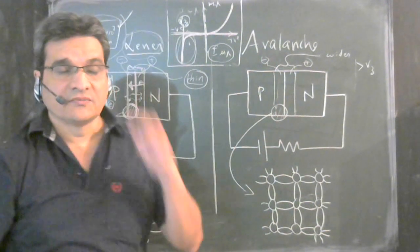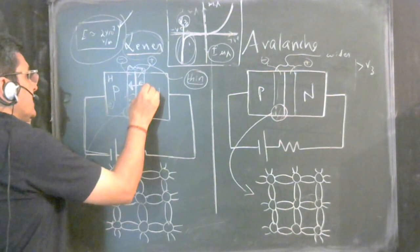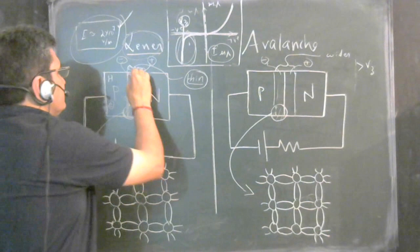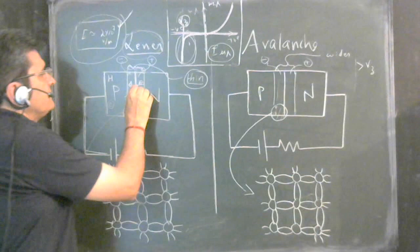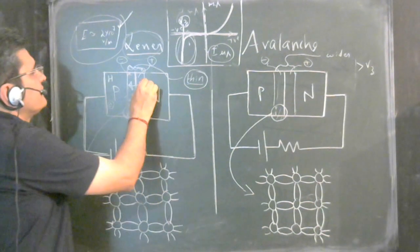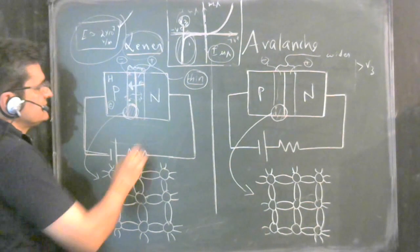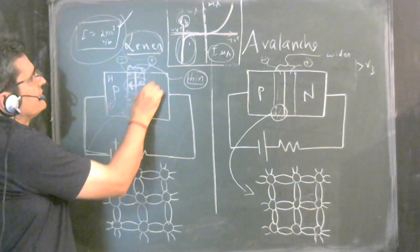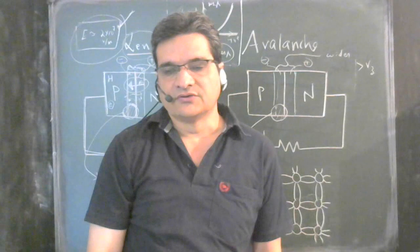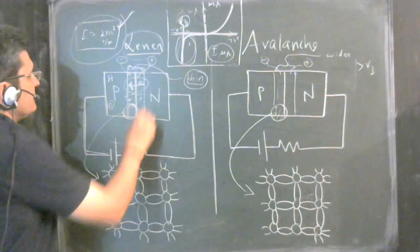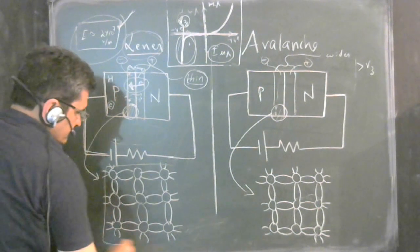This sharp increase happens because of either the Zener effect or the avalanche effect. The Zener effect occurs in heavily doped diodes where the depletion region is very thin and the electric field is of very high order. When you apply reverse bias, this electric field further increases and is almost of the range of 2 × 10^7 volts per meter.